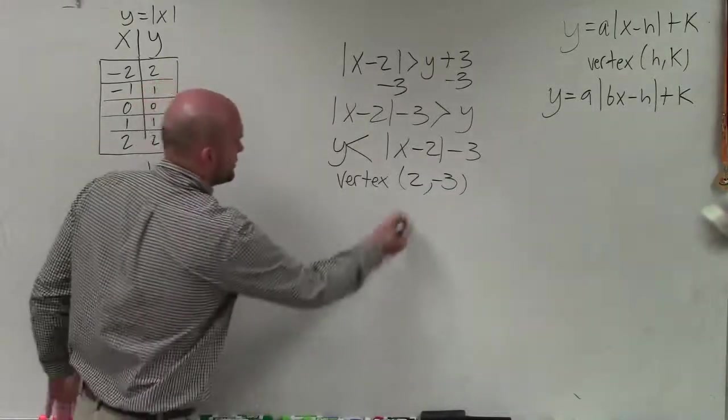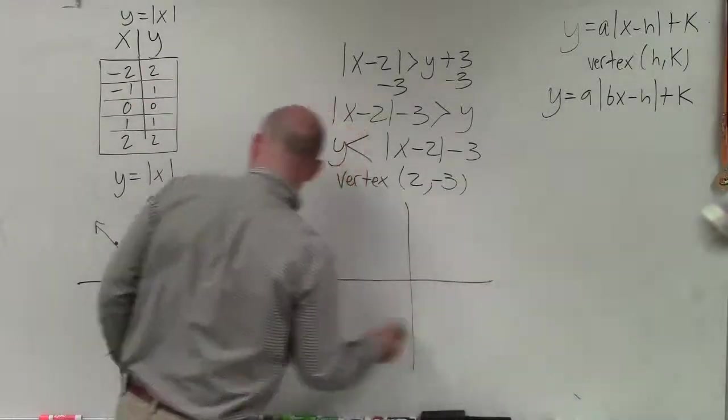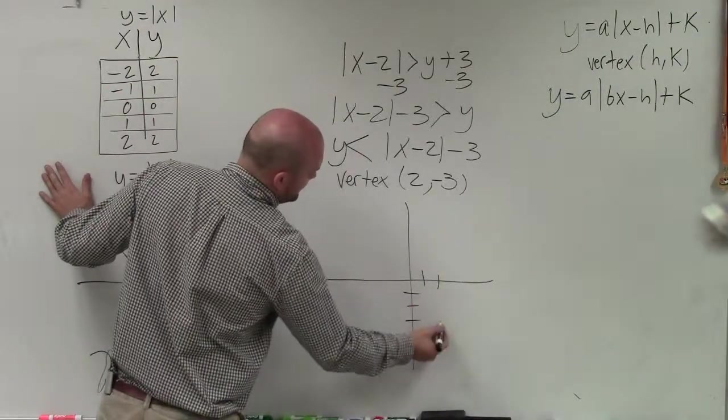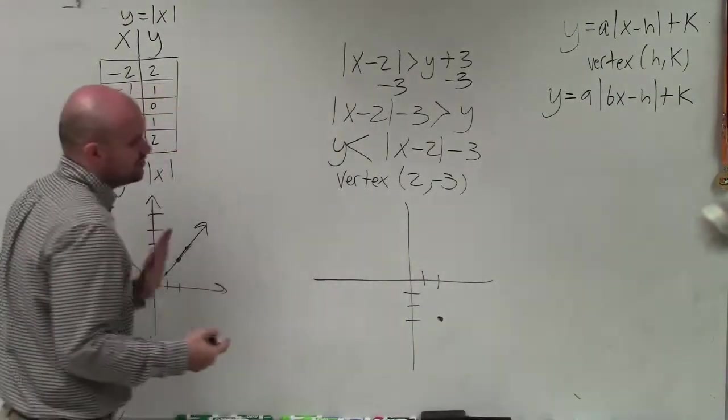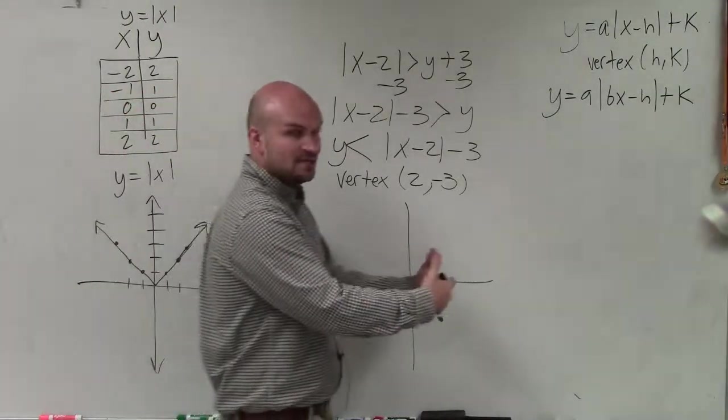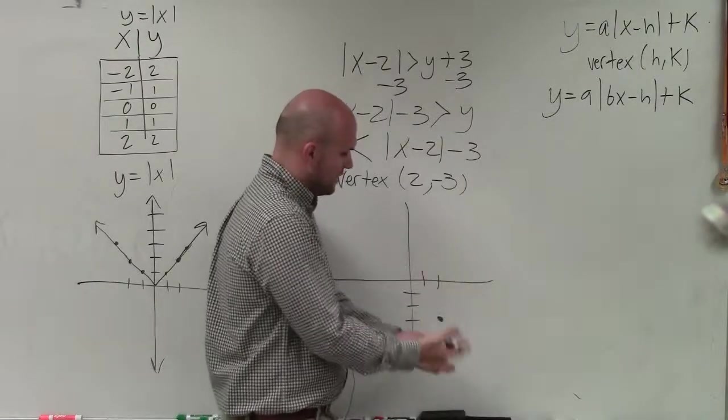So now I go ahead and graph my new vertex, which was at 0, 0, but with my transformations is now at positive 2, negative 3. So what that tells you is my graph from 0, 0, from the parent graph, has been shifted to the right two units, and then down three units.